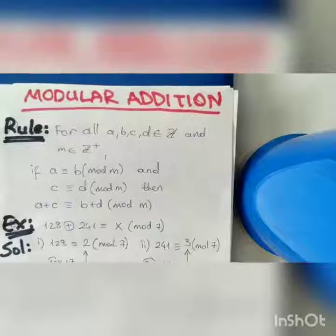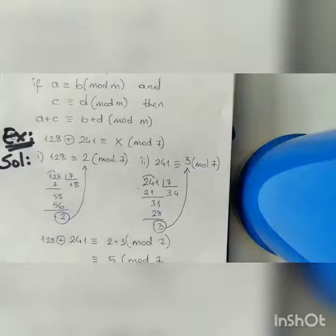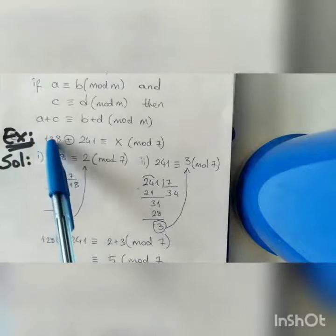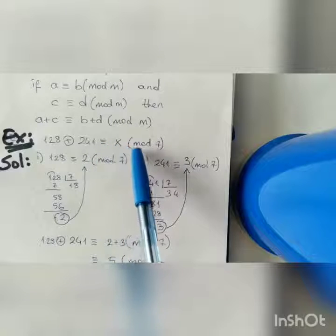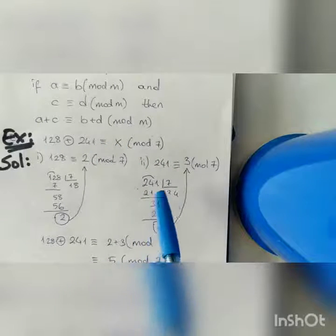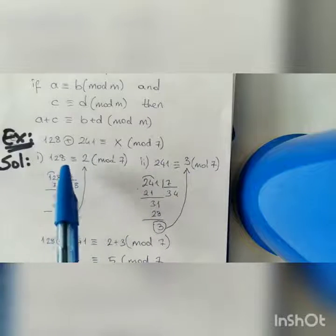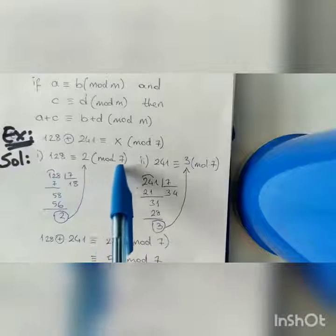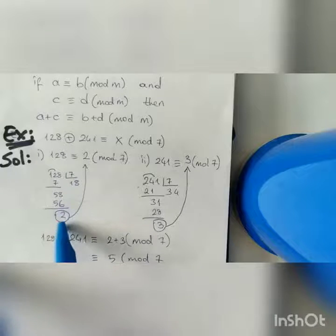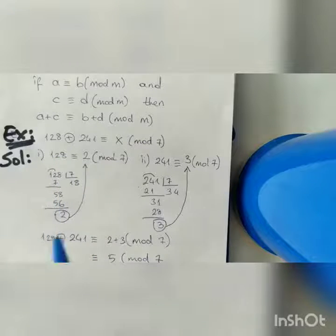Let's solve one example using this rule. Here is given 128 plus 241, which is equivalent to x modulo 7. First of all, we should find the equivalent number of 128. The equivalent number of 128 is 2. We find it by dividing 128 by 7, and we get the remainder 2. This 2 is the equivalent number of 128.